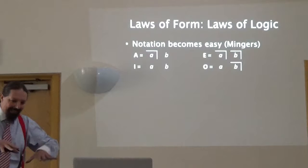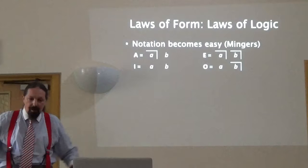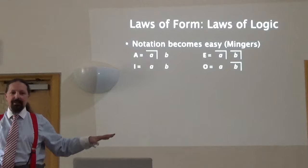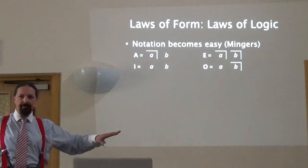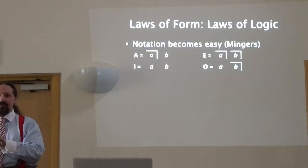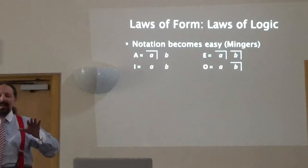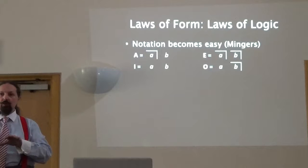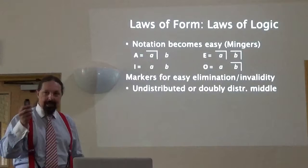Notation becomes easy. In an A proposition the subject term is distributed — we're talking about all of it, packed into a container. If something is not distributed, we can't pack all of it in — some spills out. In an E proposition, 'no A is B': we know we're talking about all of A and all of B, and never the twain shall meet. 'Some A is B' — neither of the terms is distributed. 'Some A is not B' — we know we're talking about all of B, but not all of A; A is not distributed. Using this notation gives you an immediate, visual, intuitive link to what is happening in thought when we express these four patterns.